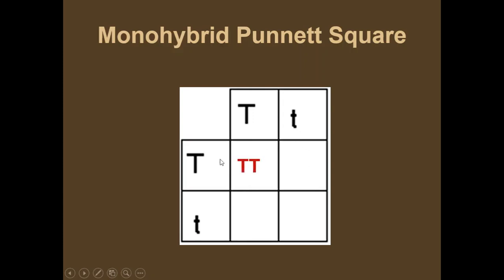Now let's look at this square. We would pull this big T over and this small T down. What would be in this next box? If you said big T, little t, you are correct. And what about this last box? What is going to be in that last box? If you said little t, little t, you are correct.